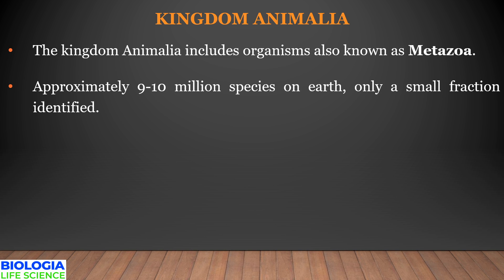There are approximately 9 to 10 million species on Earth, but only a small fraction of these species have been identified.